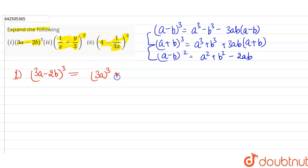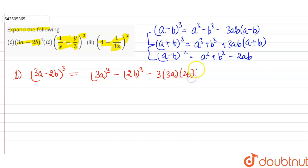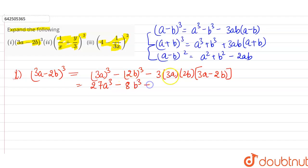Applying the identity: (3a)³ - (2b)³ - 3 × 3a × 2b × (3a - 2b). This gives 27a³ - 8b³ - 18ab(3a - 2b).